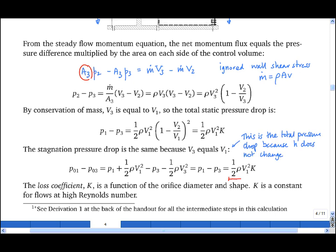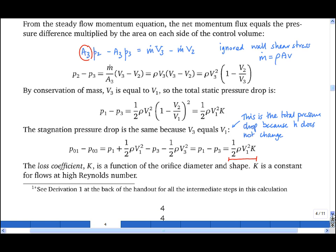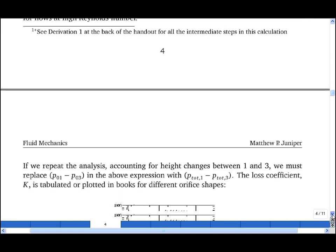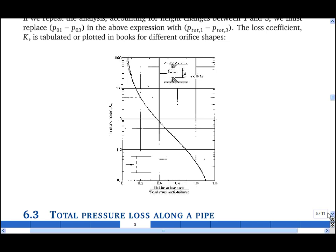And it can be expressed as a half rho V1 squared times k, where the loss coefficient k is a function of the orifice diameter and shape. For flows at high Reynolds number, k is a constant, it no longer depends on the Reynolds number, and k is tabulated or plotted in books, and here's an example of such a plot.